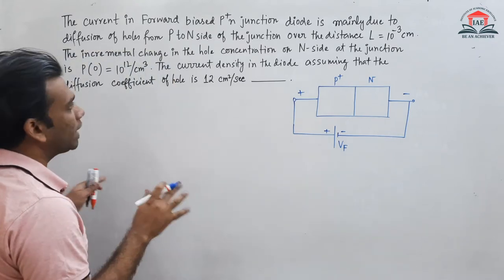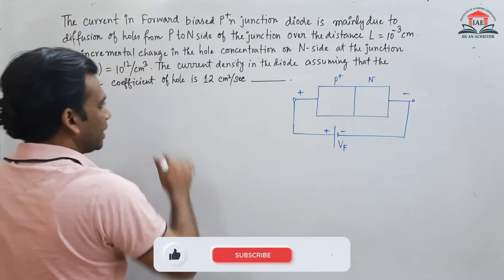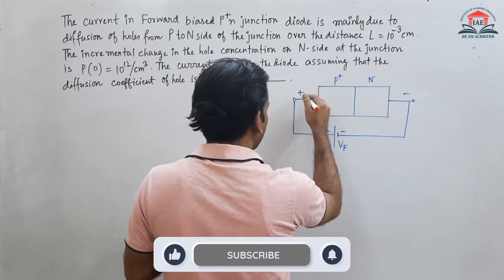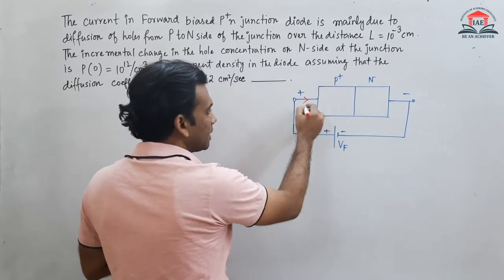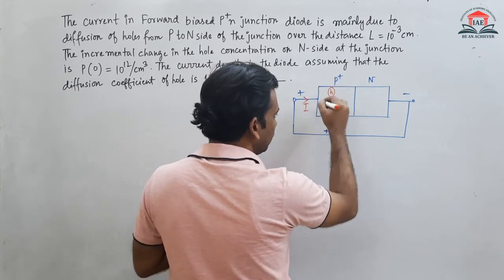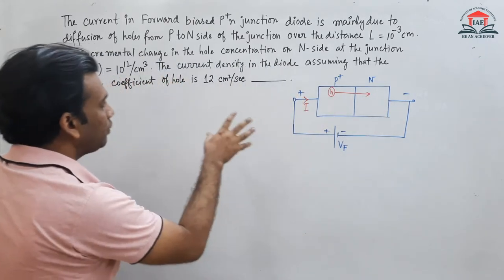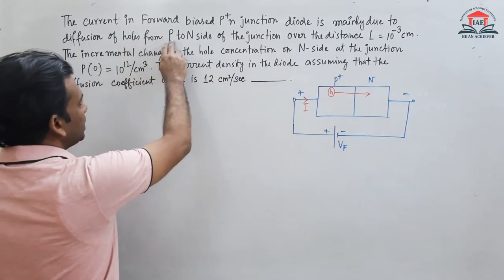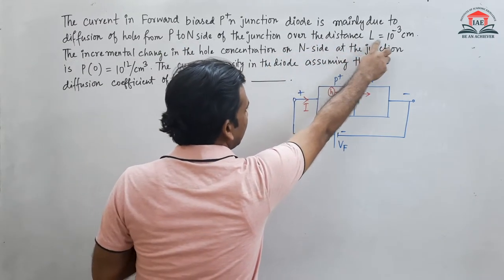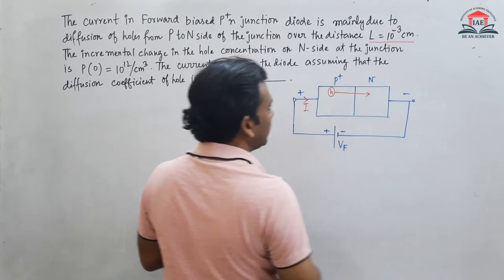In forward bias the current that will flow — in which direction will the current flow? The current is mainly due to holes flowing from the P side to the N side by diffusion, over the junction, over a distance L = 10^-3 centimeter.